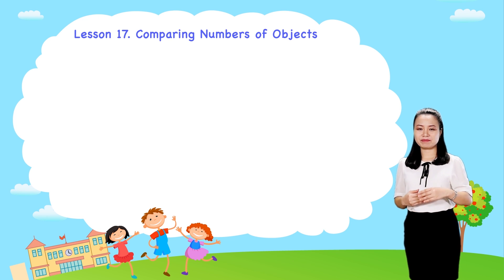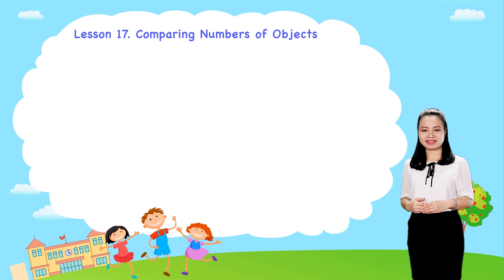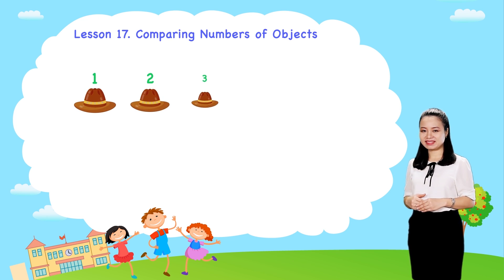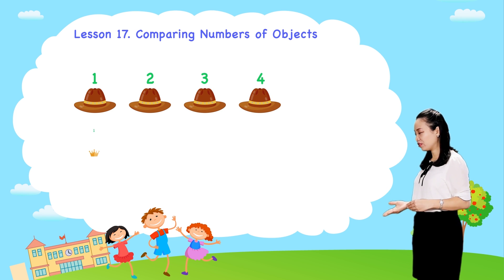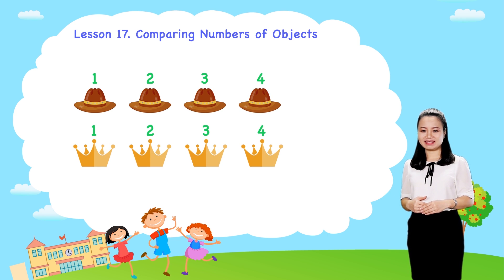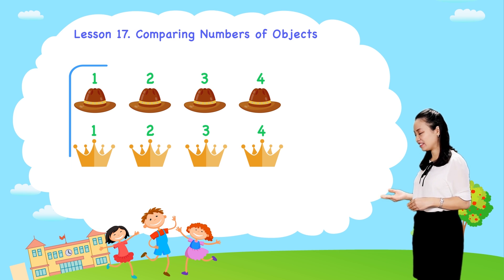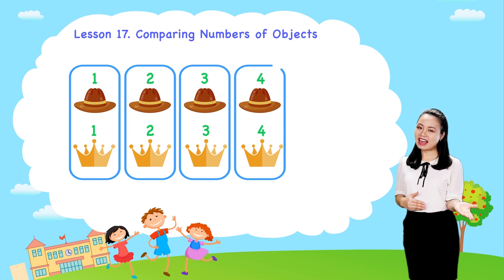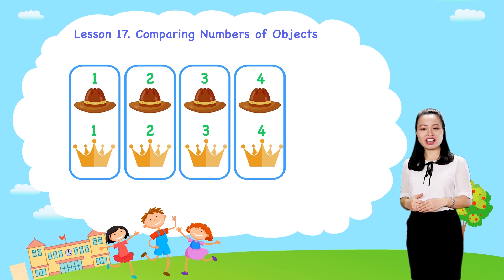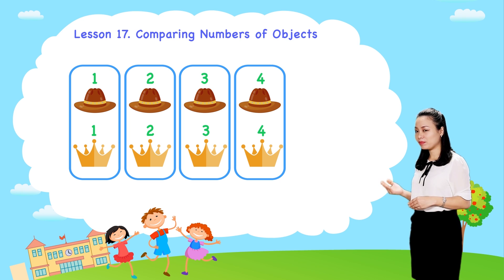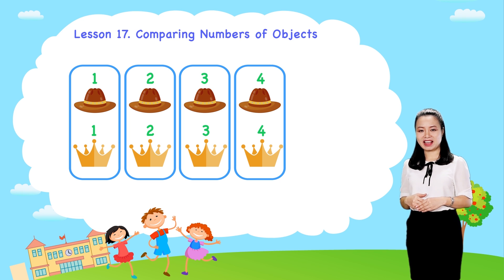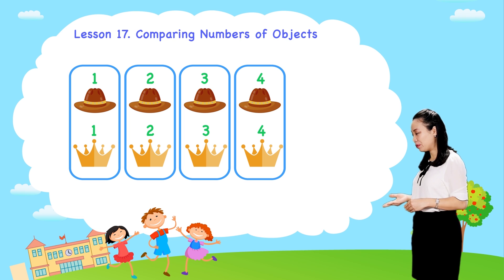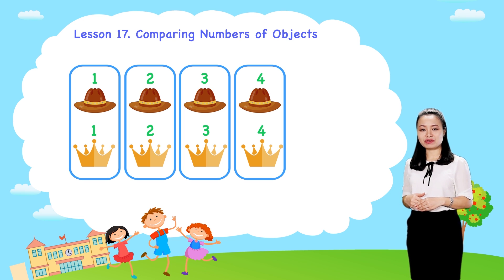Next, we have four hats and four crowns. If we pair a hat with a crown, then each hat is paired with a crown. Because there is an equal number of hats and crowns.